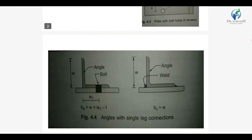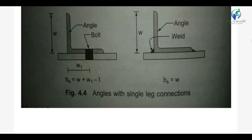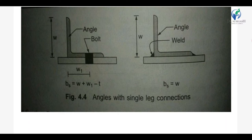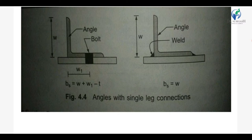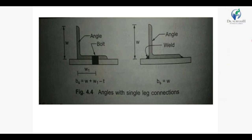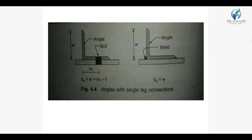Next, we consider the angle with single leg connecting. Two possibilities exist: the short leg is connected to the gusset plate, or the longer leg is connected to the gusset plate. We calculate Bs (shear lag width). As shown in the figure for the bolting case, W is the outstanding leg of the angle and W1 is the distance from the outermost leg to the centre of the fastener. So Bs = W + W1 − T. For welding, Bs = W — that is, when using a welded connection, Bs is taken directly as the outstanding leg width.